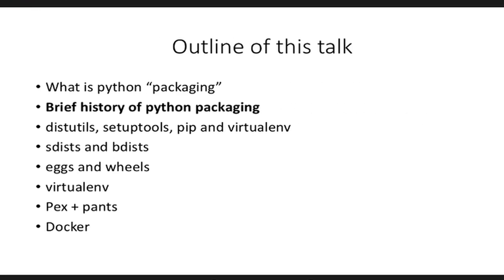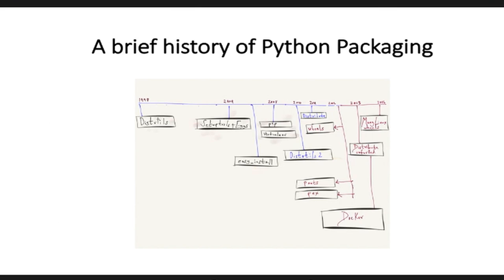Now that we have an understanding of what Python packages are and how the interpreter finds packages, let's look at a brief history of Python packaging. Distutils was the first thing that shipped in 1998 along with core Python. Then setup tools and eggs showed up in 2004. We had pip and virtualenv show up in 2008. Before pip, we had easy_install, which popped up sometime around 2005.